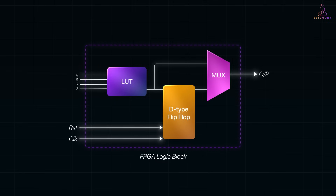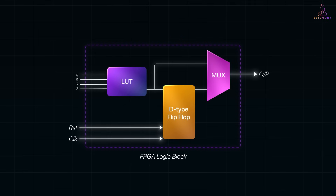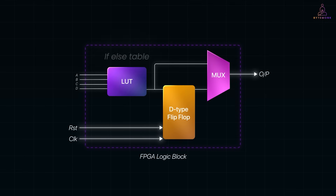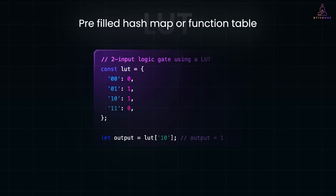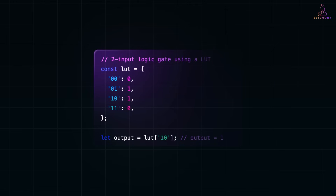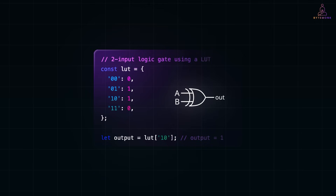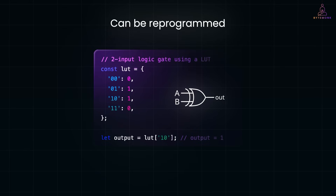Inside each CLB there's a tiny component called a lookup table, or LUT. Think of a LUT like a very small hard-coded table that maps inputs to outputs. If you are a software engineer, a LUT is like a pre-filled hash map or a function table. In this case, the LUT is behaving like an XOR gate. Instead of hard-wiring a logic function like an AND or OR gate, FPGAs use LUTs to simulate the behavior by storing a truth table. This means a single LUT can be reprogrammed to act like any small logic function.